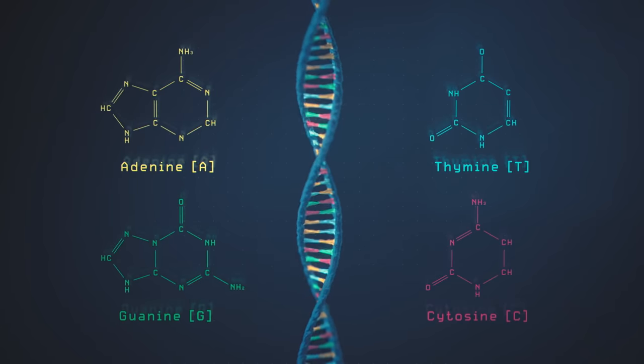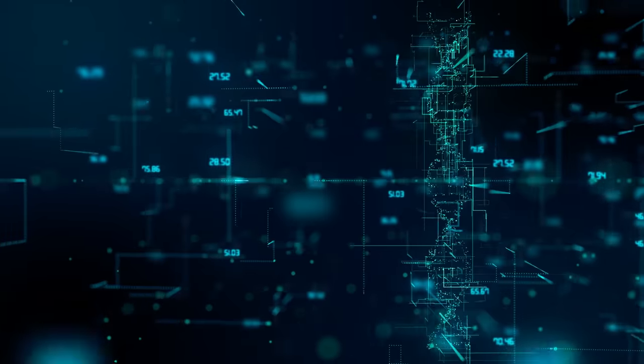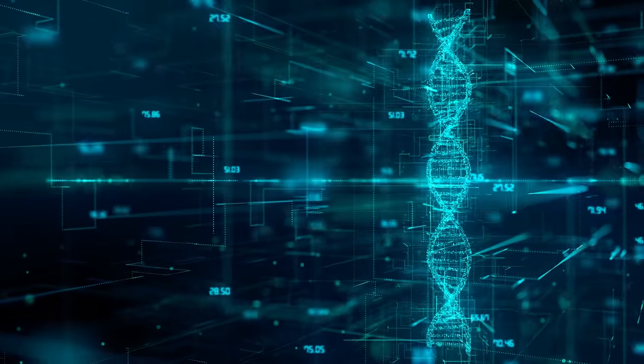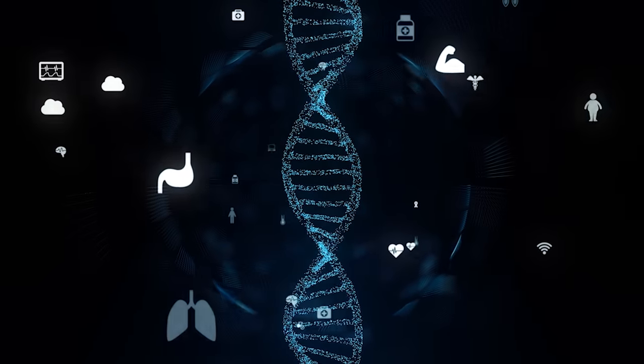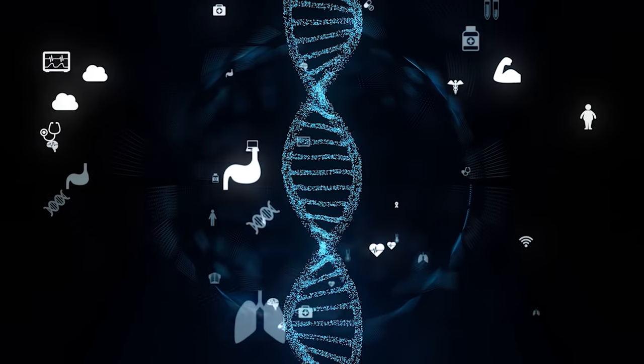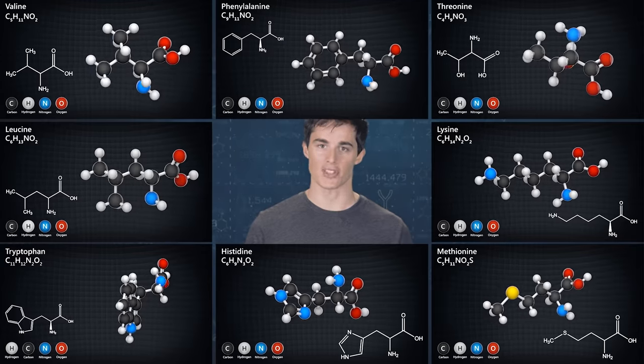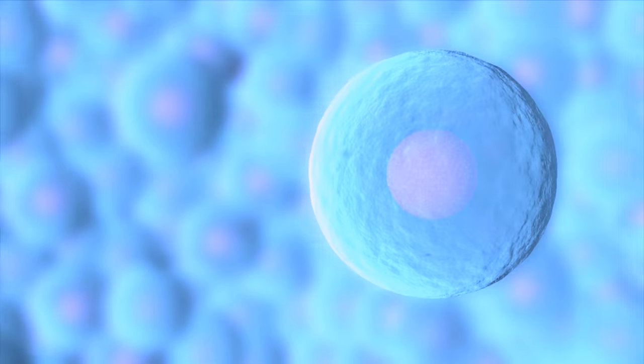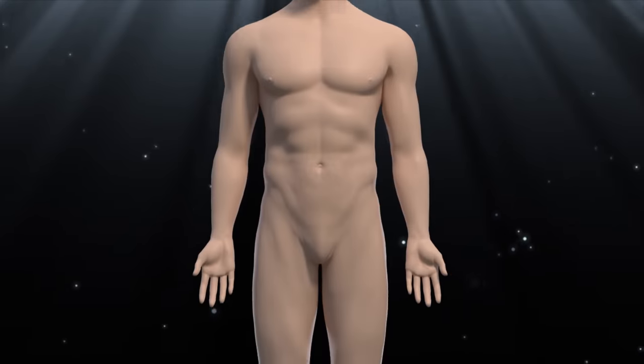The way these letters are sequenced encodes the information needed to make proteins. A gene is then a portion of the DNA containing a complete sequence of instructions for making a specific protein. Proteins are the building blocks and the messengers of cells, which in turn are little machines and building blocks making up tissues and organs and entire organisms.